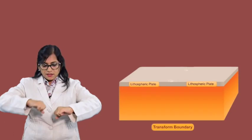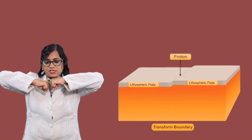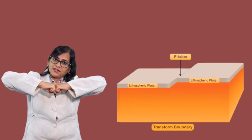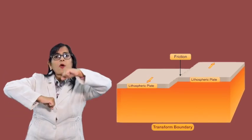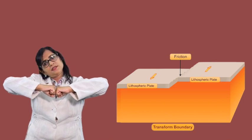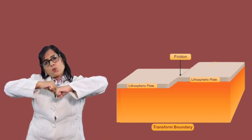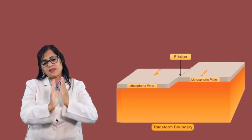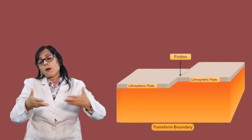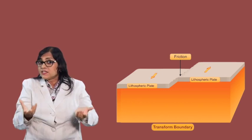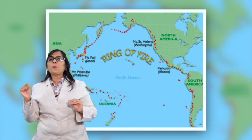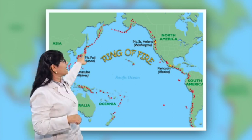Another case is that two plates may slide past each other — this is called a transform boundary. The two plates move in relation to each other, and there is friction between them. This friction manifests as earth movements and violent earth movements — that is, earthquakes. One major example of where two plates converge is the Pacific plate region.